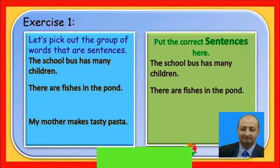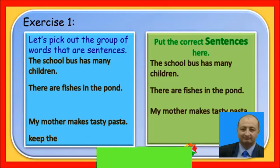'My mother makes tasty pasta' — this group of words makes complete sense, begins with a capital letter and ends with a period, so it is a sentence. 'Keep the book' — this group of words does not begin with a capital letter nor does it end with a full stop, so it is not a complete sentence and we cannot place it in the column to the right.